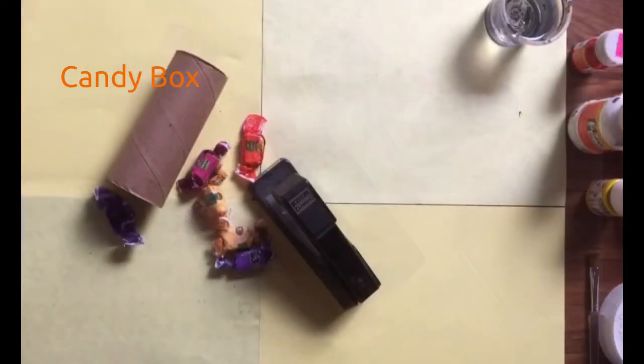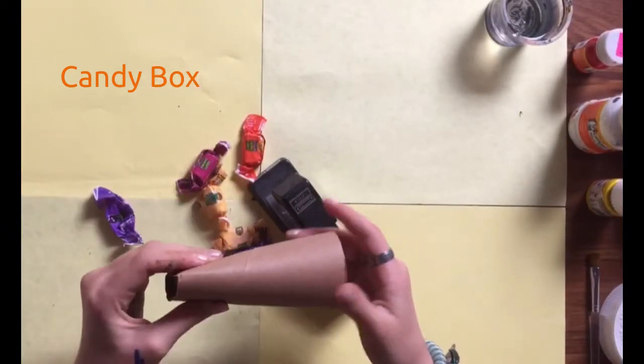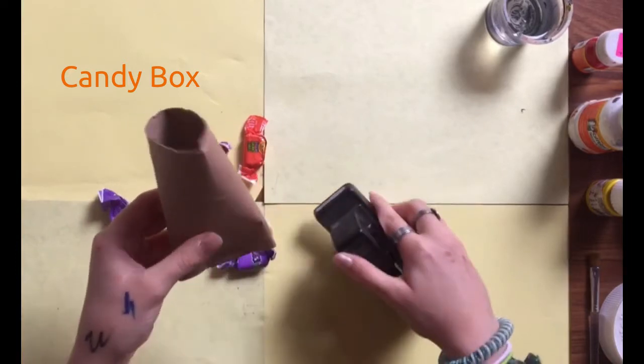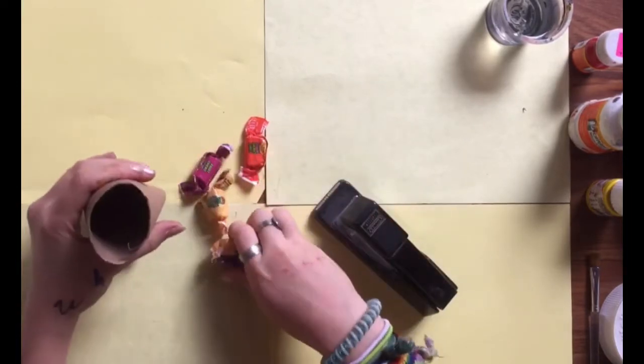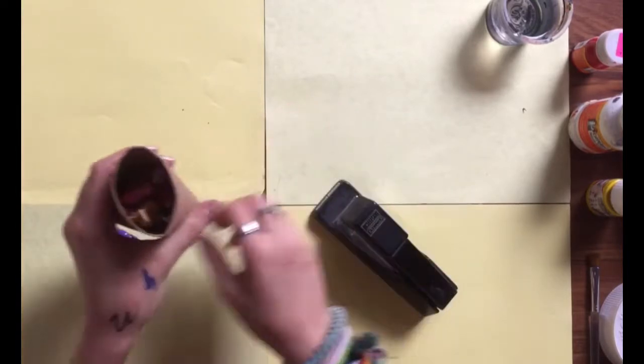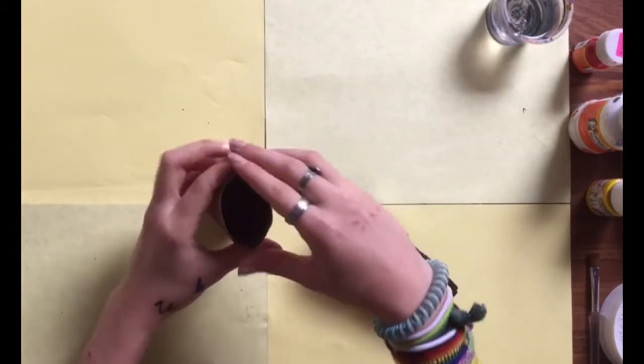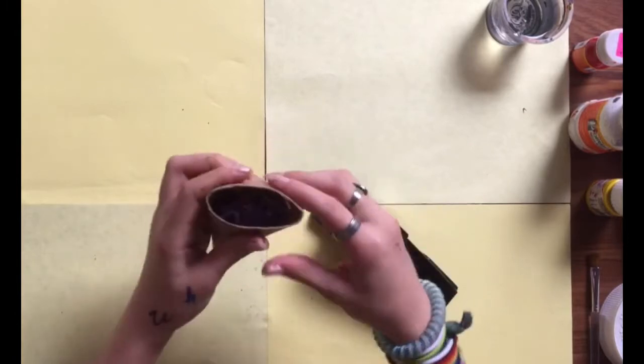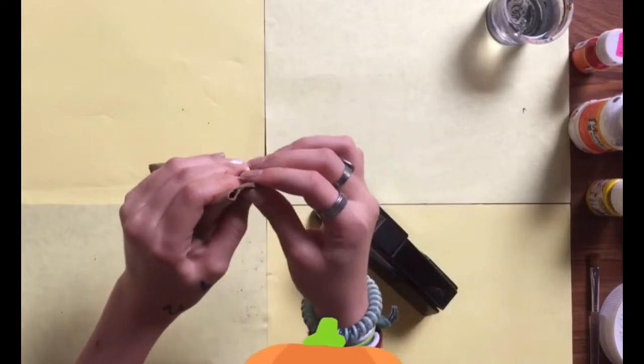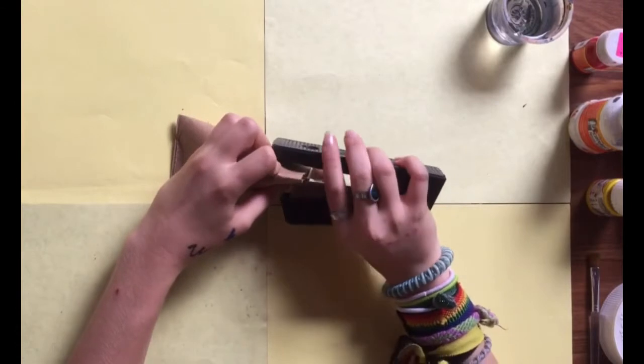Okay, so how you're going to make it look like a candy corn is first you're going to staple one side. Then you want to put in your candy because there'll be no other time to do that. Then you're gonna pinch it the exact other way so it looks like a triangle. And here we go again. Please don't pinch your fingers.